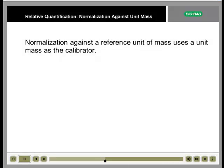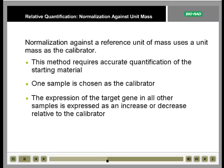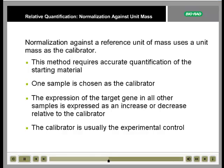The first of these methods is normalization against a reference unit of mass. This method uses a unit mass, such as a cell number or amount of nucleic acid, as the calibrator, and so requires accurate quantification of the starting material. Usually, one sample is chosen as the calibrator, or control, and the expression of the target gene in all other samples is expressed as an increase or decrease relative to that calibrator. The calibrator is usually the experimental control.